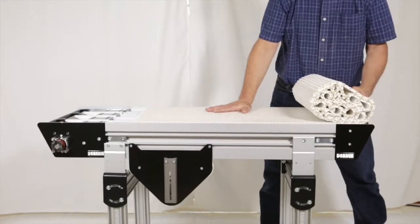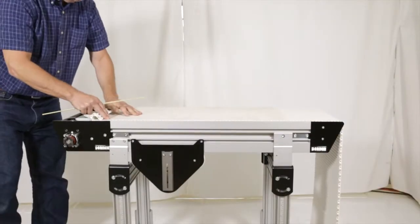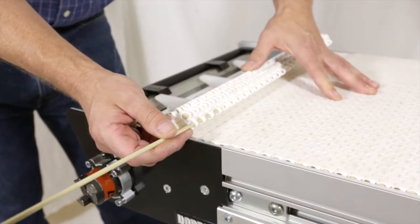Position the belt on the conveyor frame. Install a rod into the end of the belt to keep the links aligned during installation.